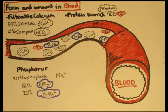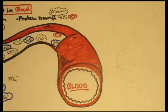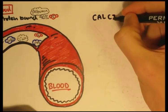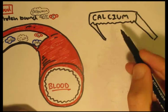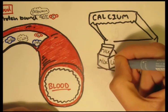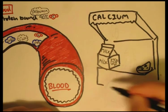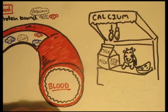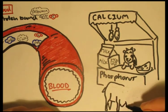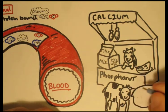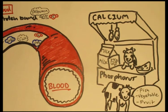So calcium can be found in many types of food. Calcium can be found in foods such as milk, fish, and anything produced by a cow. Phosphorus is relatively the same and can be found in dairy products, fish, vegetables, and fruits.